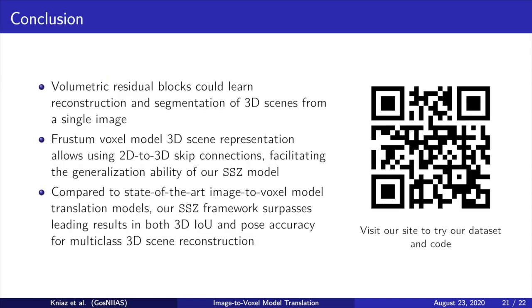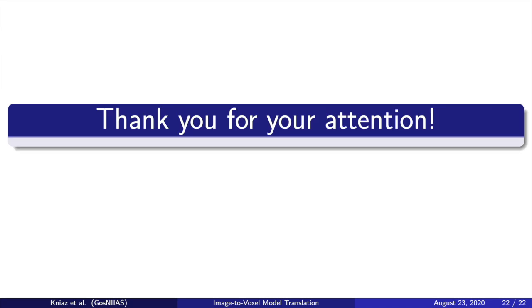Our main observation is that the frustum voxel model scene representation allows using skip connections, facilitating the generalization ability of our model. Volumetric residual blocks can learn reconstruction and segmentation of 3D scenes from a single image. Compared to state-of-the-art image-to-voxel model translation models, our SSZ framework surpasses leading results in both 3D intersection over union and pose accuracy for multi-class 3D scene reconstruction. Thank you for your attention!